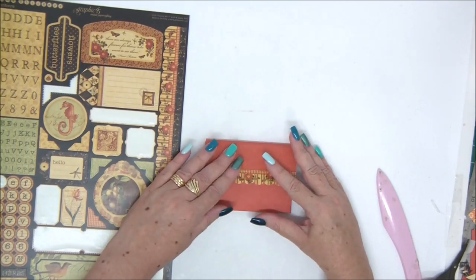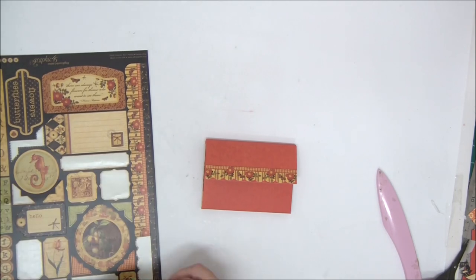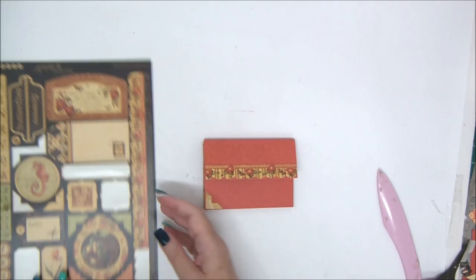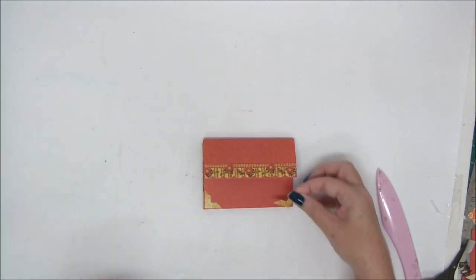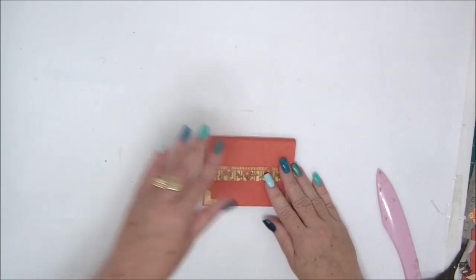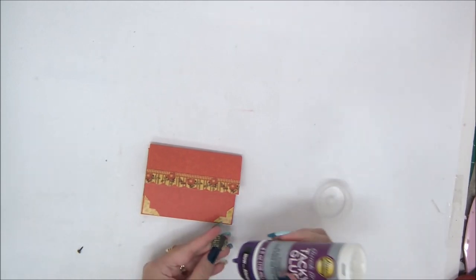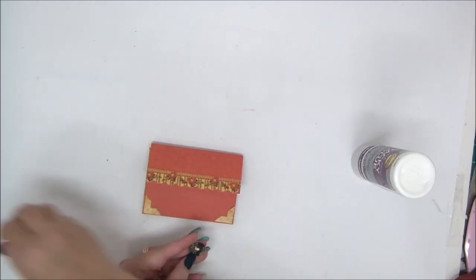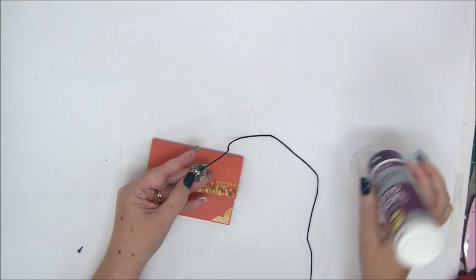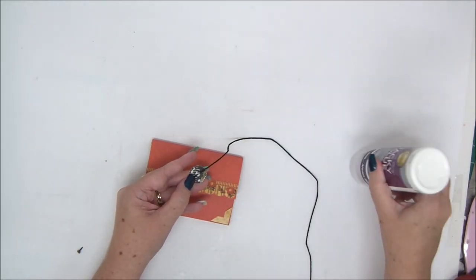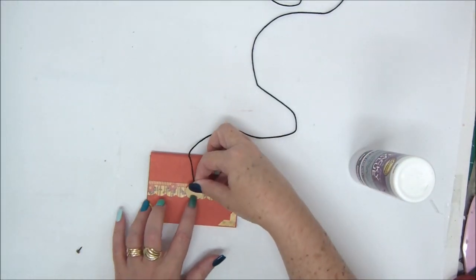I've just punched a small circle and I'm adding corners. Then I can show you how I add the brad for the closure. I have here a small brad and a circle that I punched. I want to glue it down with the string or the twine under it.